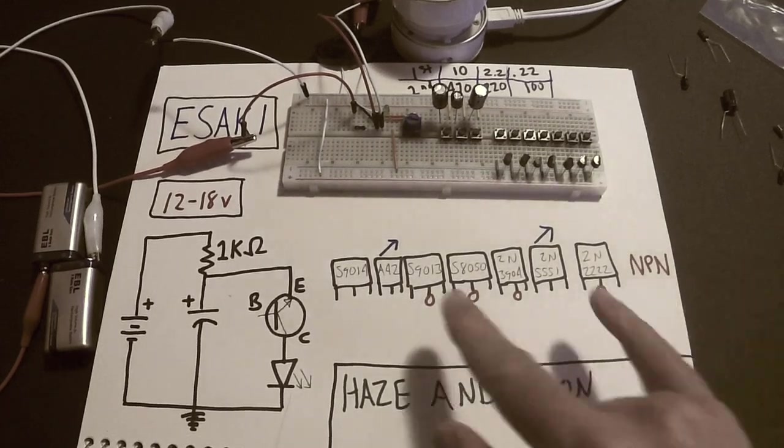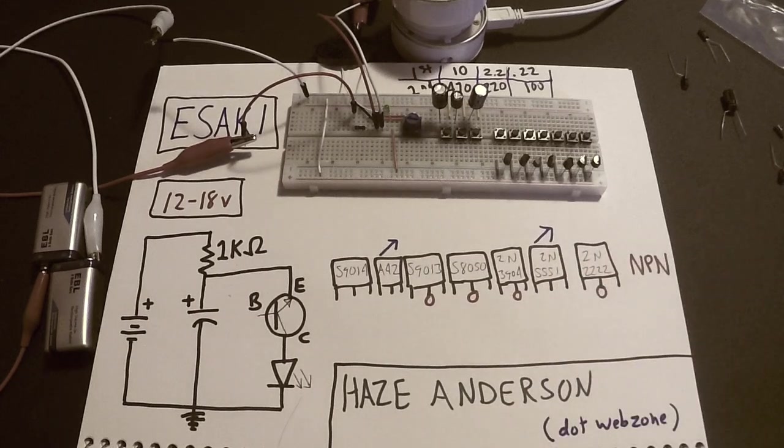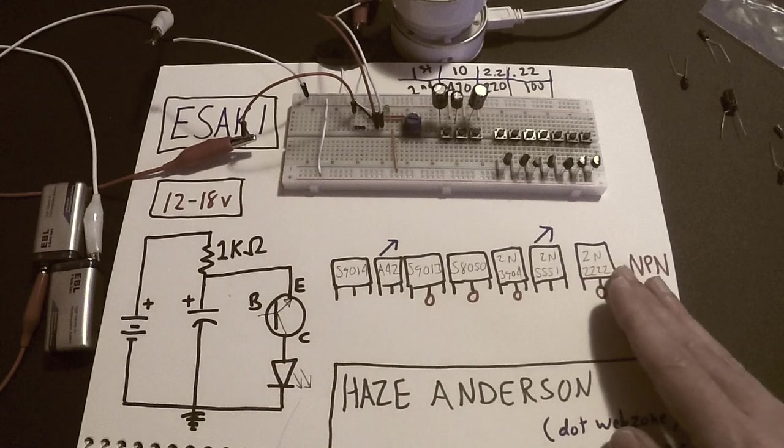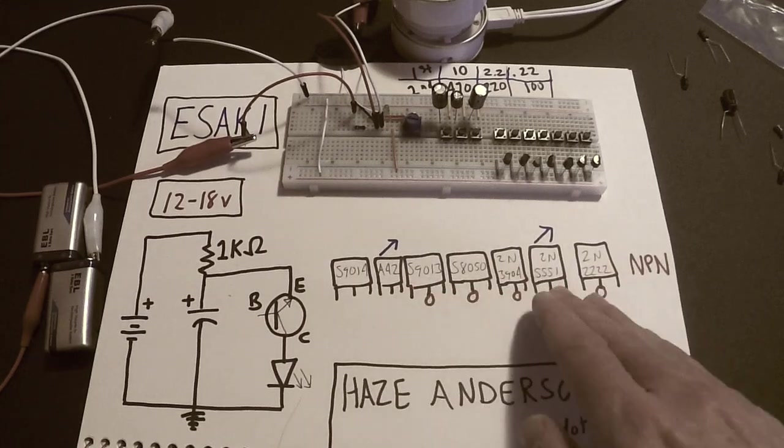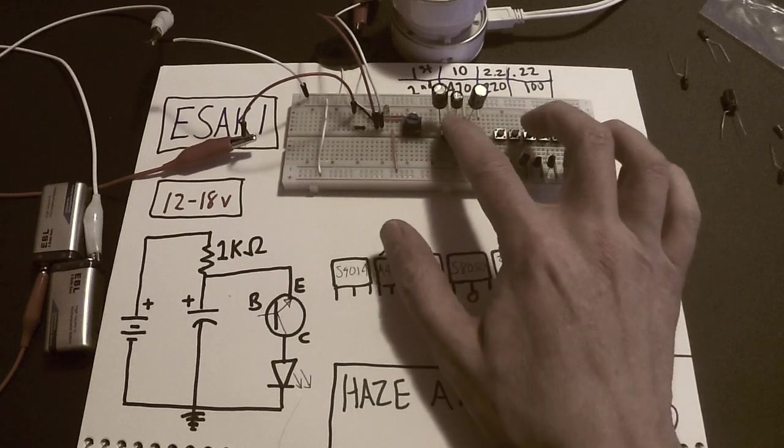Okay before we wrap this up what do these two arrows right here mean? Well the waveform that is produced by this circuit is a sawtooth. And what I've discovered, not that I haven't discovered it but what I've noticed is that they're all pretty much ramped down with the exception of the A42 and the 2N5551. They ramp up and I'll see if I can demonstrate this for you.